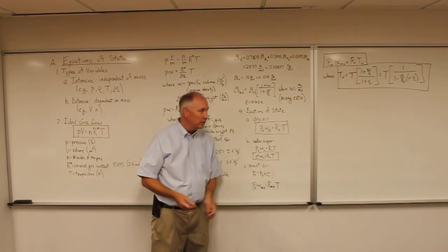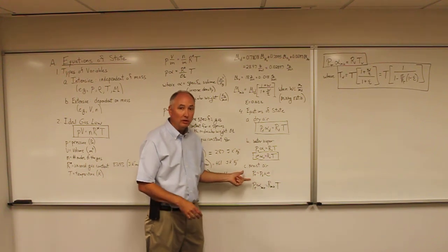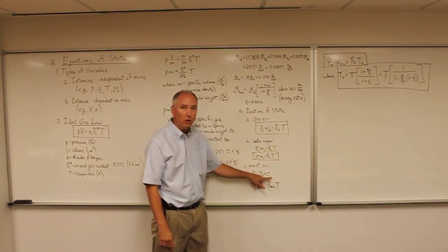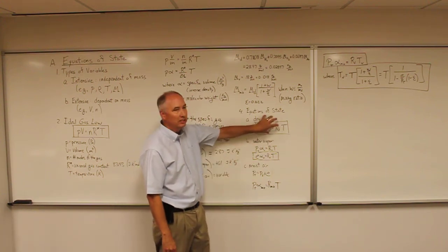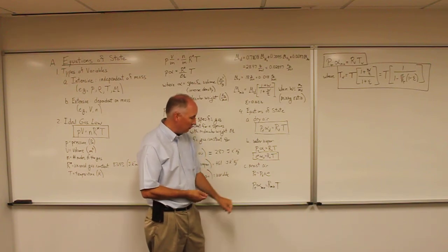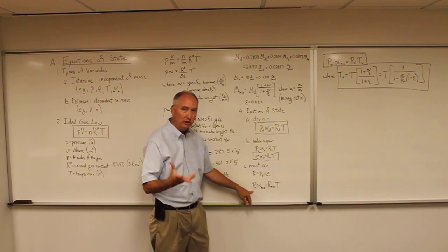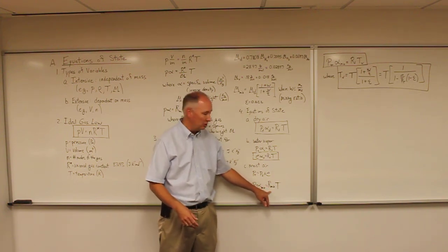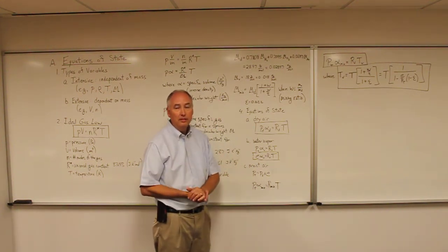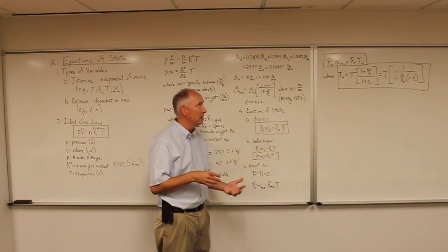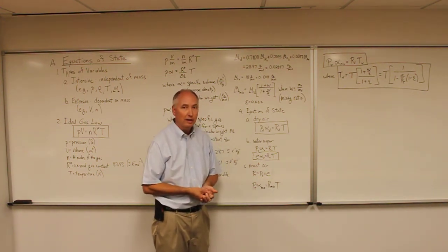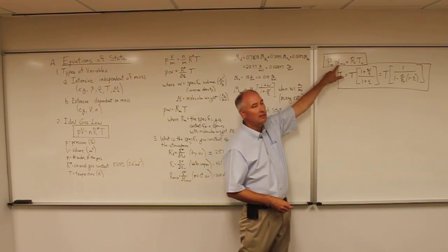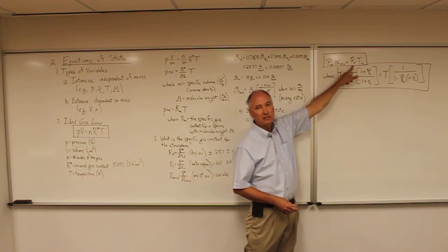For moist air — the combination of dry air and water vapor — we use Dalton's law of partial pressures: total pressure equals dry air pressure plus water vapor pressure. Rather than substituting each equation separately, we prefer to write the total pressure as the specific volume of the mixture times the specific gas constant of the mixture times temperature. However, since the mixture composition changes with location and time, we developed a simplified alternative.